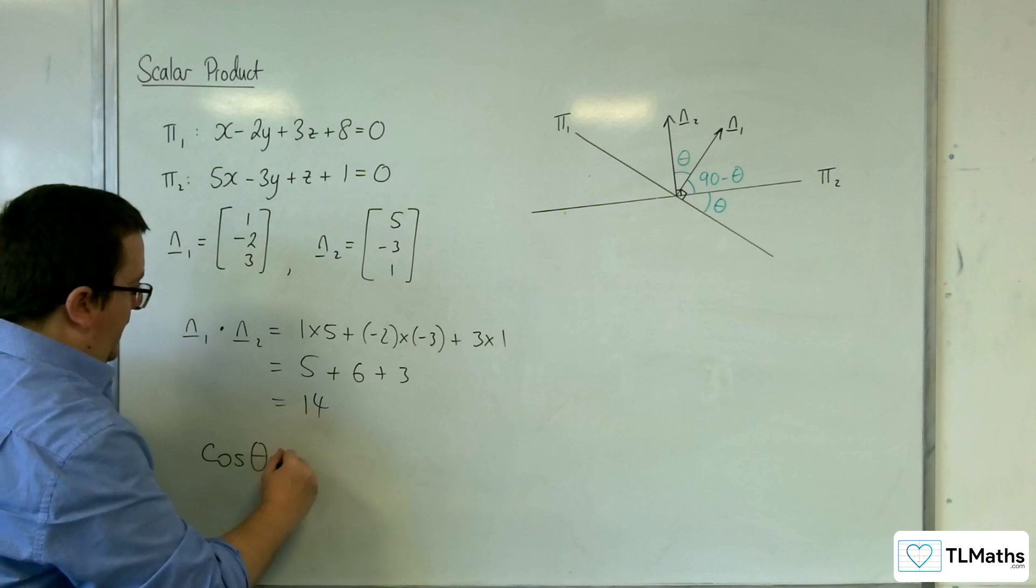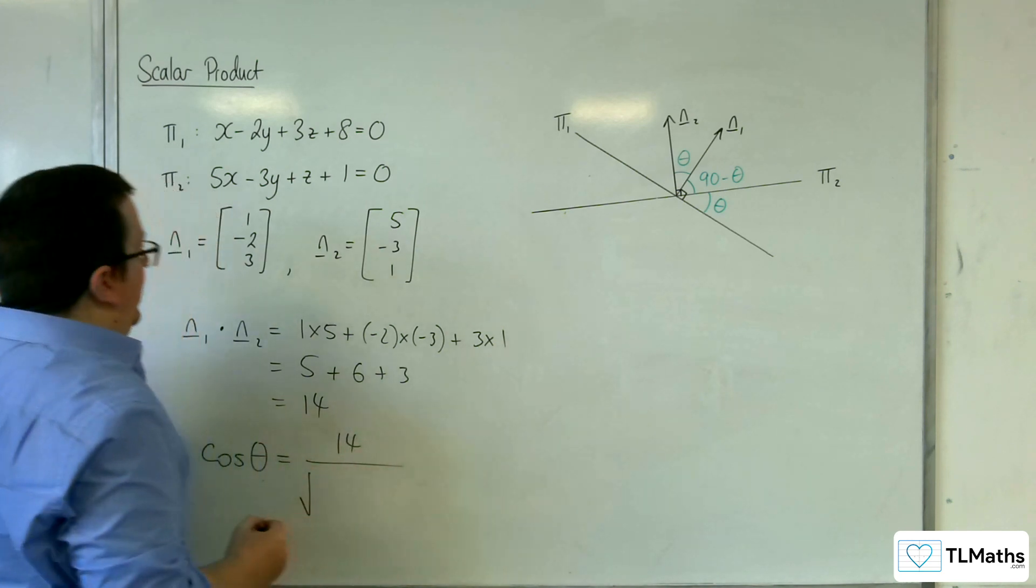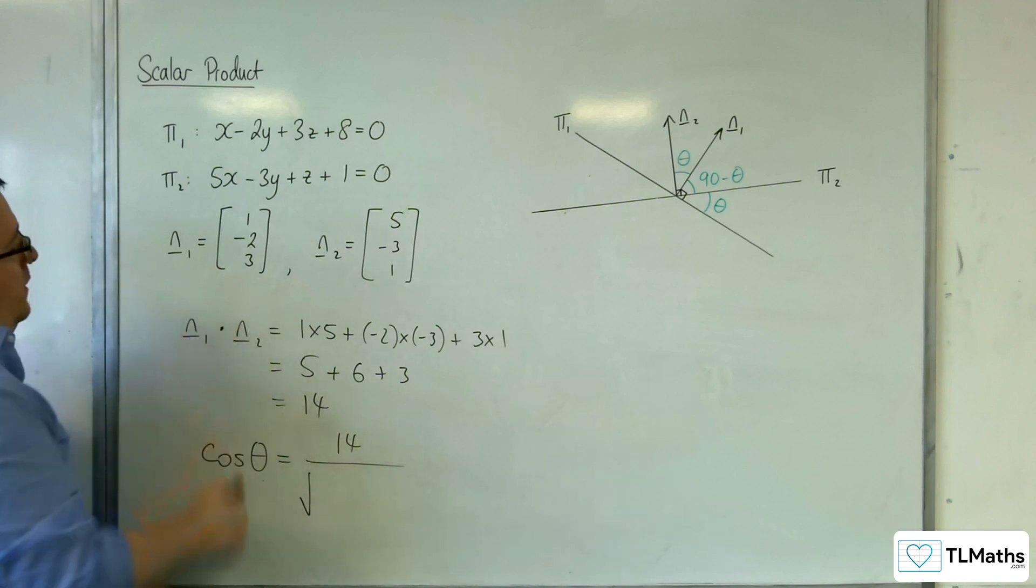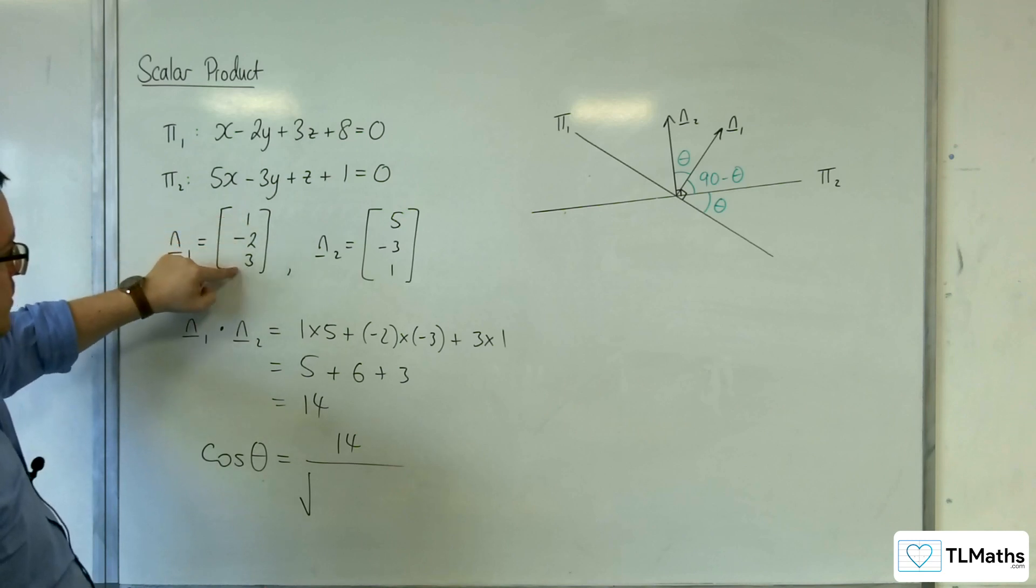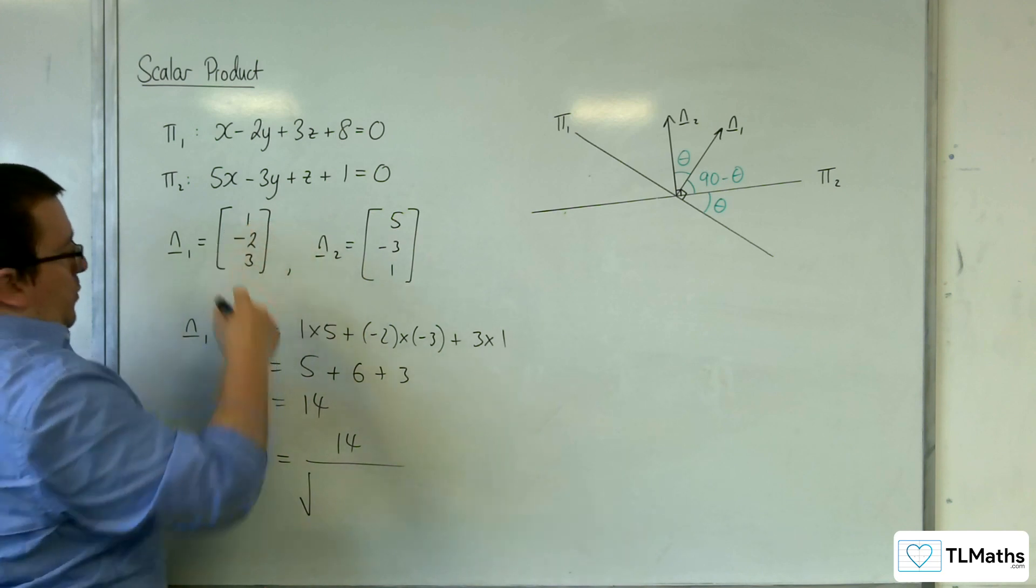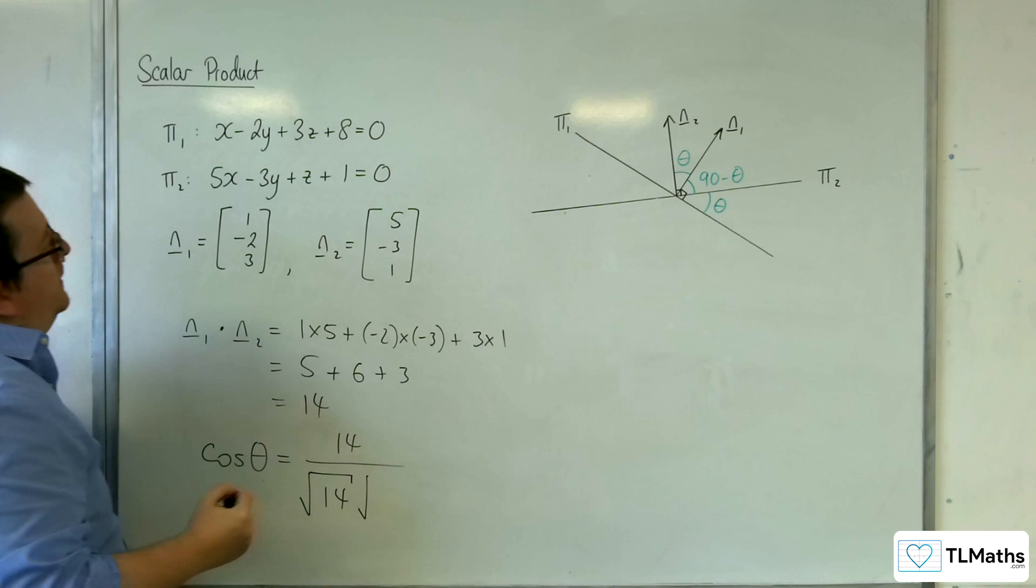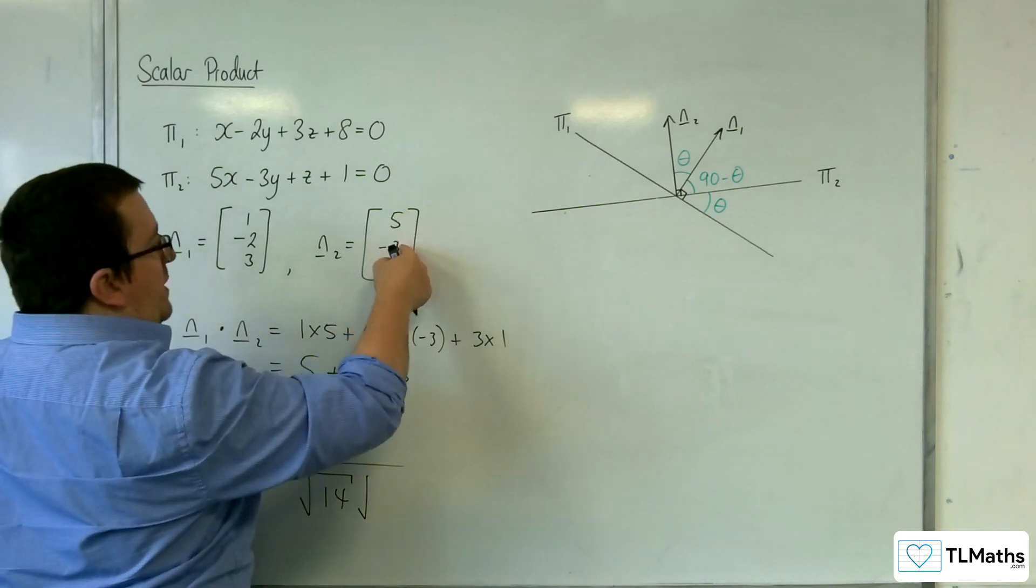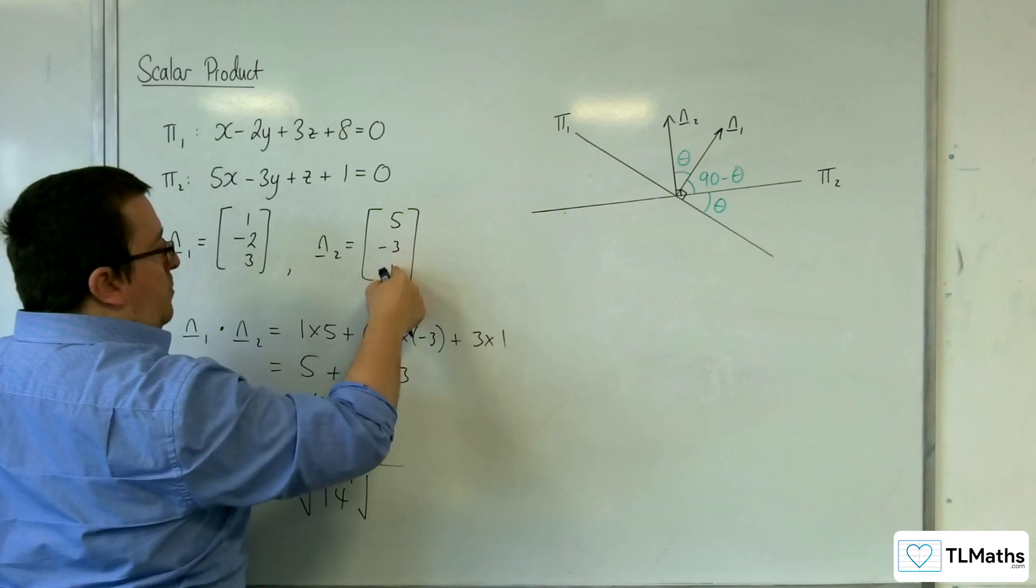So cosine of theta is equal to 14 over the length of n1, which is 1 squared plus 2 squared plus 3 squared. So 1 plus 4 plus 9. So 9 plus 4 is 13 plus 1 is 14, so root 14. And then we've got 25 plus 9 plus 1, so 25 plus 9 is 34, plus 1 is 35.